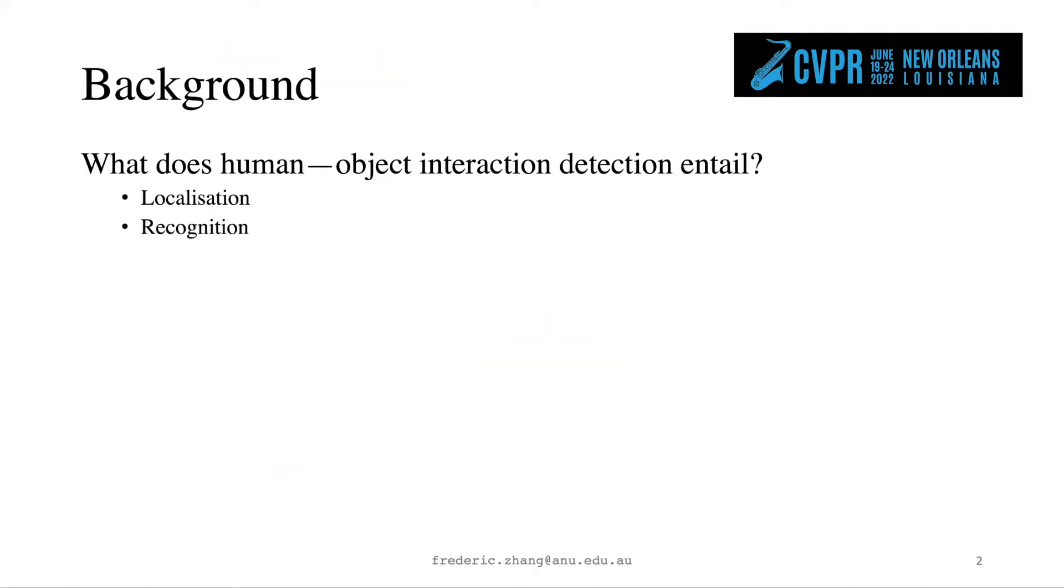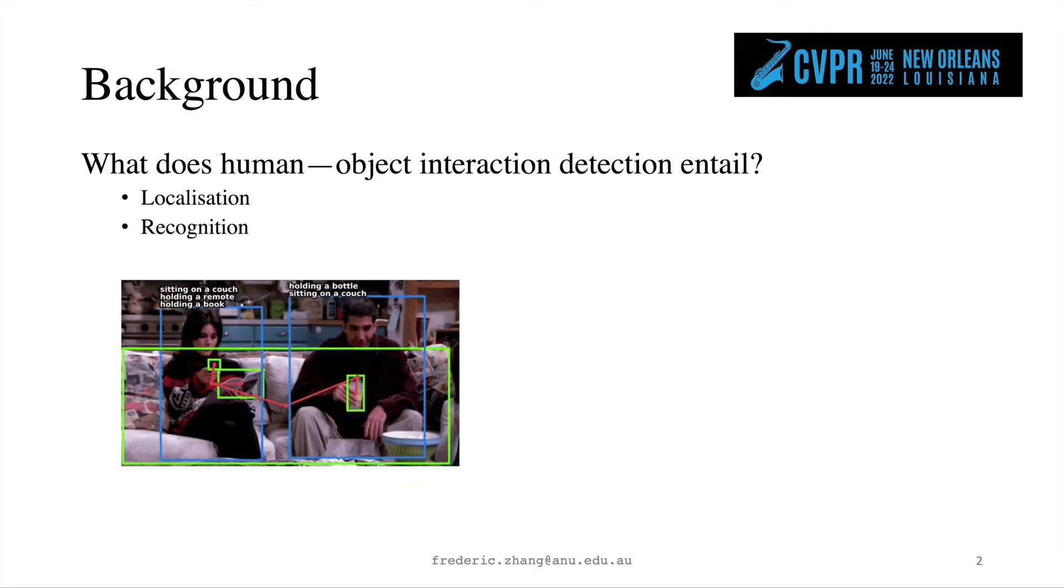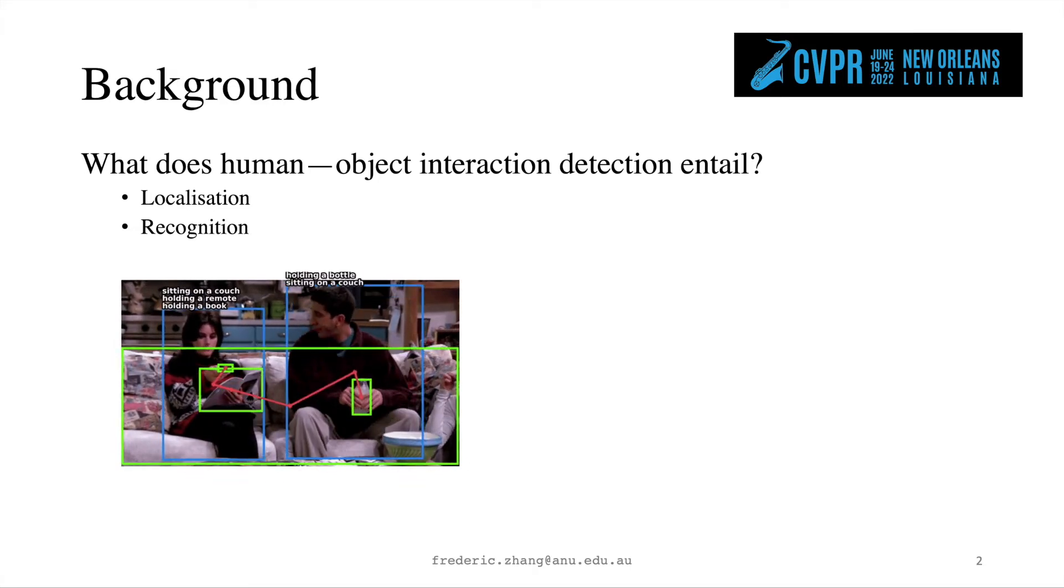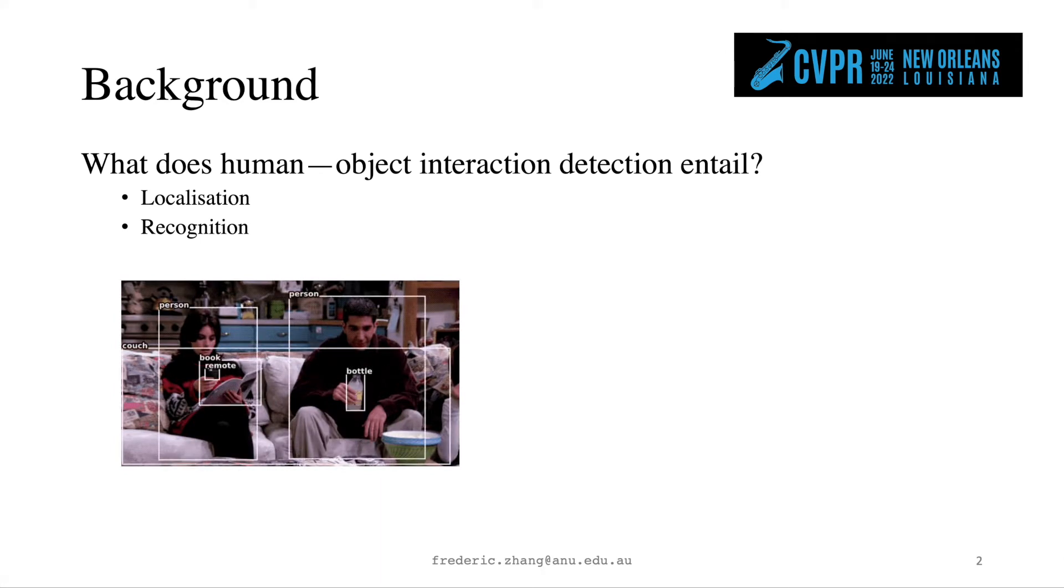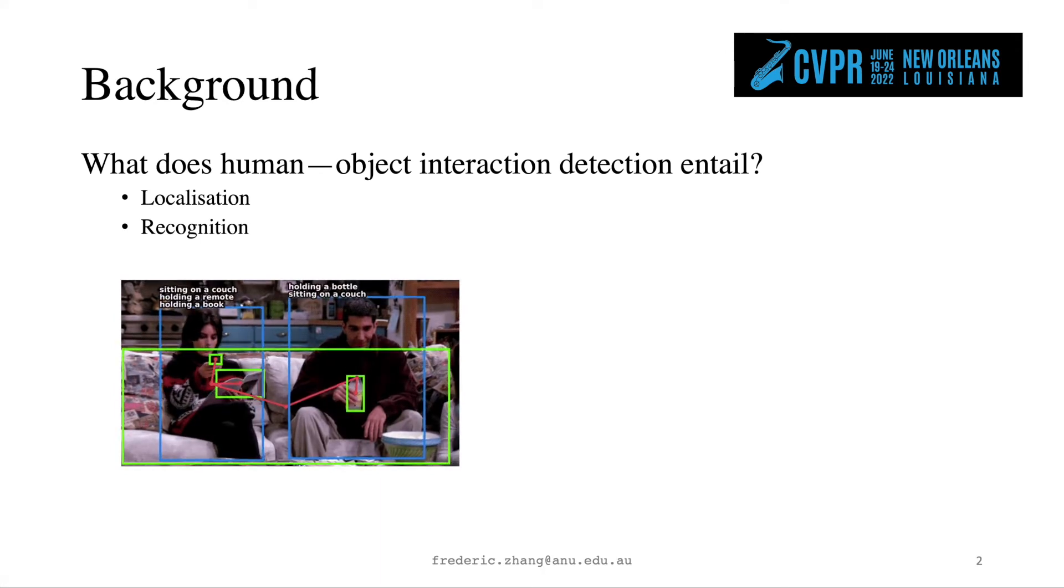Let's start with some background. A detection task usually consists of two subtasks. In this case, we want to first localise the interactive human and object instances and then recognise that interaction. Below is a sample output from our model.